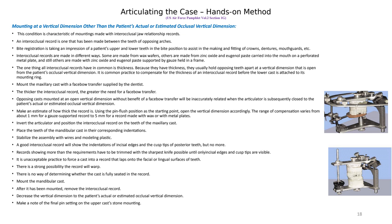One thing all intraocclusal records have in common is thickness. Sometimes that material creates a slight opening because its thickness interferes with occlusal contact. Because they have thickness, they hold the opposing teeth apart at the vertical dimension, which opens up the vertical. It is common practice to compensate for the thickness of the bite registration before attaching the lower cast to the mounting ring. The thicker the intraocclusal record, the greater the need for a face bow transfer, because the face bow transfer is the most accurate record of the patient's bite.